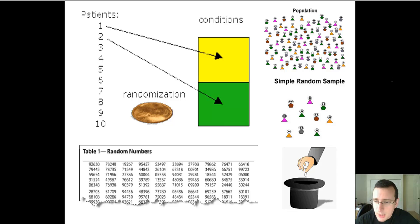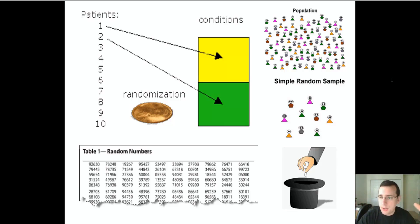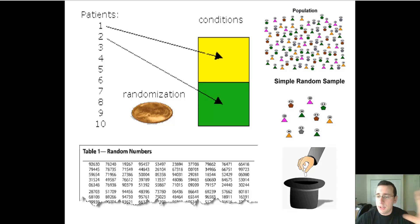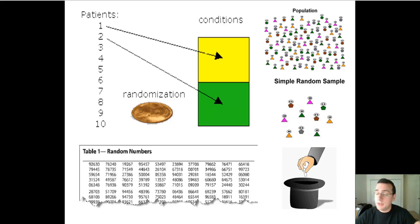When it comes to sampling, this has to do with getting a population that's too large for you to measure everybody, and creating groups — experimental, control, placebo — that truly represent this population so that you can do a proper test. Otherwise, your experiment won't be valid because you won't have tested in a way that truly represents what's going to happen in the real world.